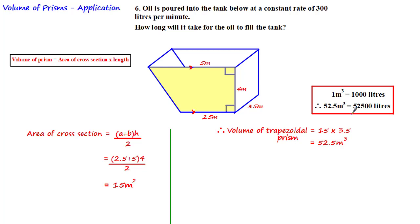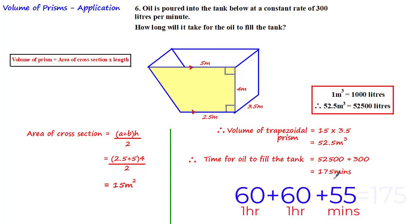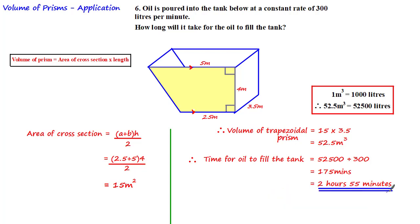Knowing the total capacity is 52,500 liters, we divide by 300 liters per minute to get the time: 52,500 ÷ 300 = 175 minutes. Converting to hours and minutes: 60 + 60 + 55 = 175 minutes, which is 2 hours and 55 minutes.